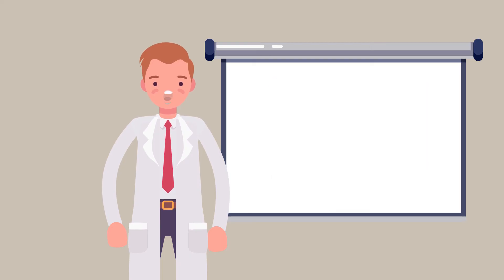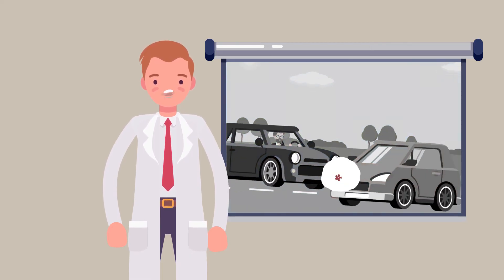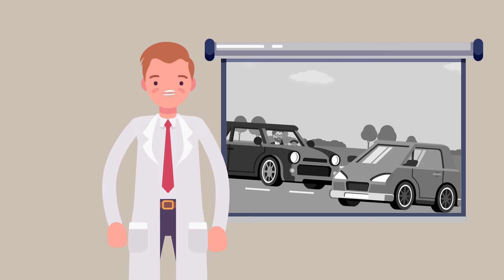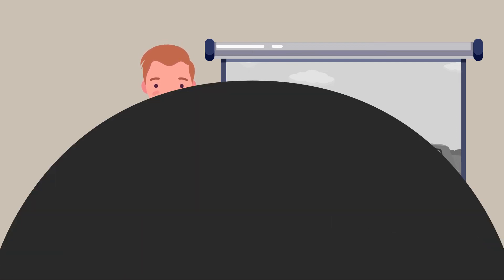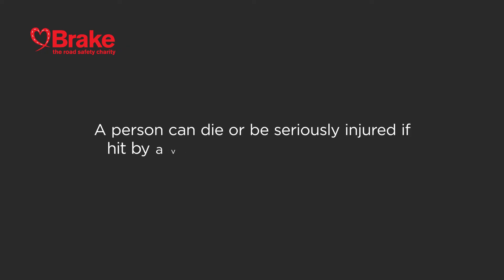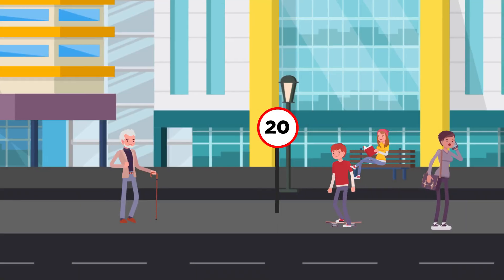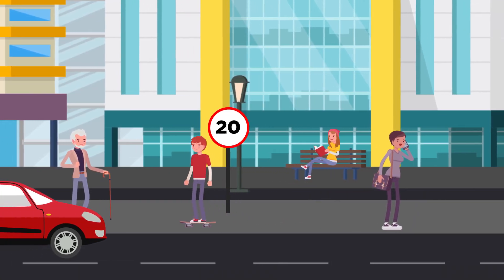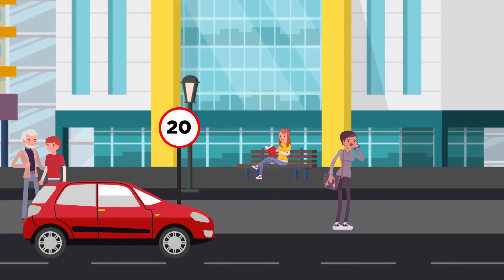But because we sometimes drive too fast, we collectively increase the risk of crashes on our roads and we increase the risk of someone that we love being involved in a crash. A person can die or be seriously injured if hit by a vehicle travelling at any speed. That's why it's important to keep within speed limits and drive at the right speed for the road conditions.